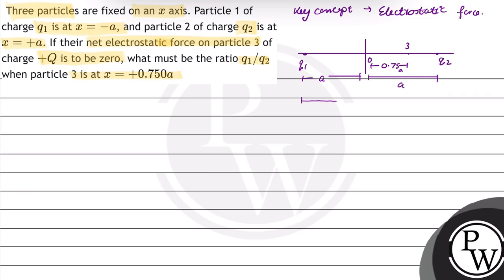The distance from particle 1 to particle 3 will be equal to a plus 0.75a, that is equal to 1.75a. And the distance between particle 3 and particle 2 will be a minus 0.75a, that is equal to 0.25a.